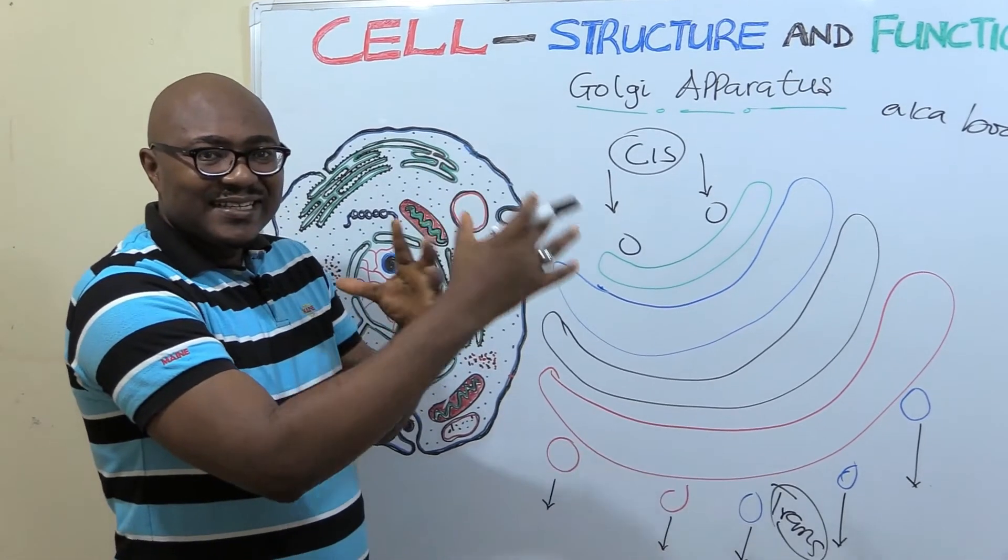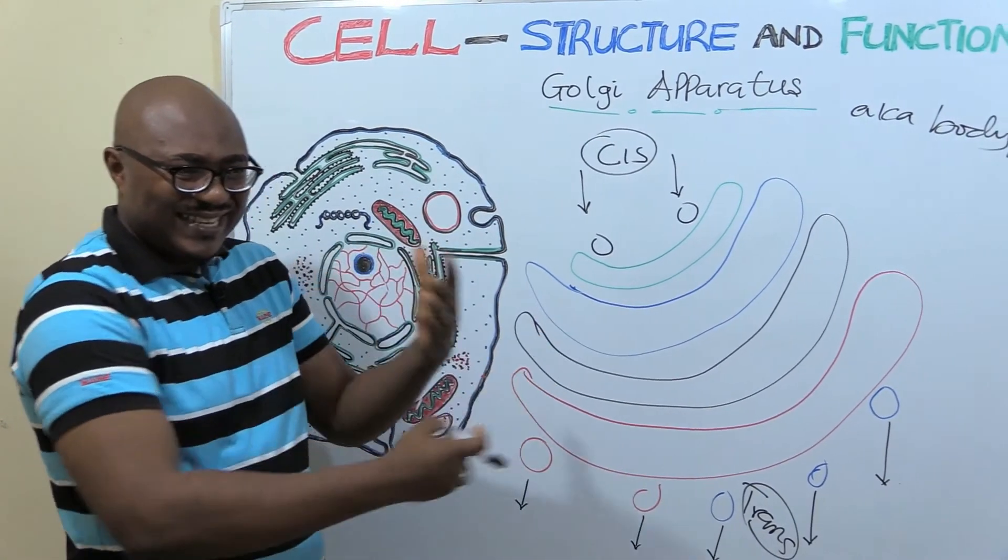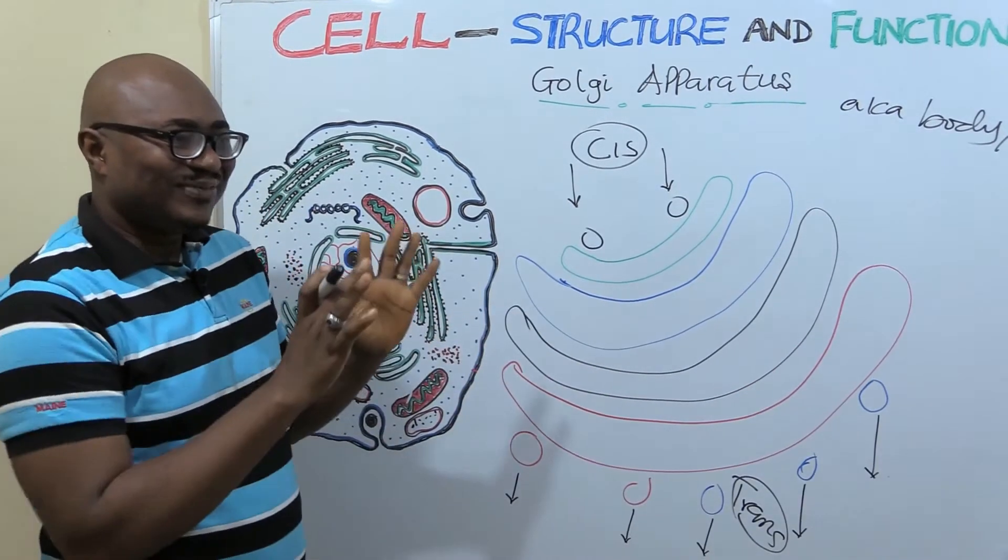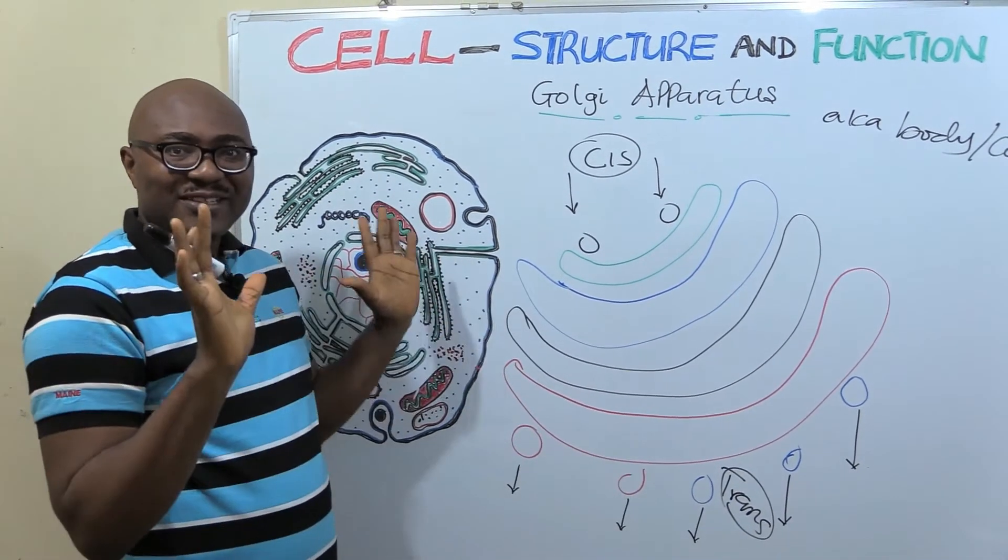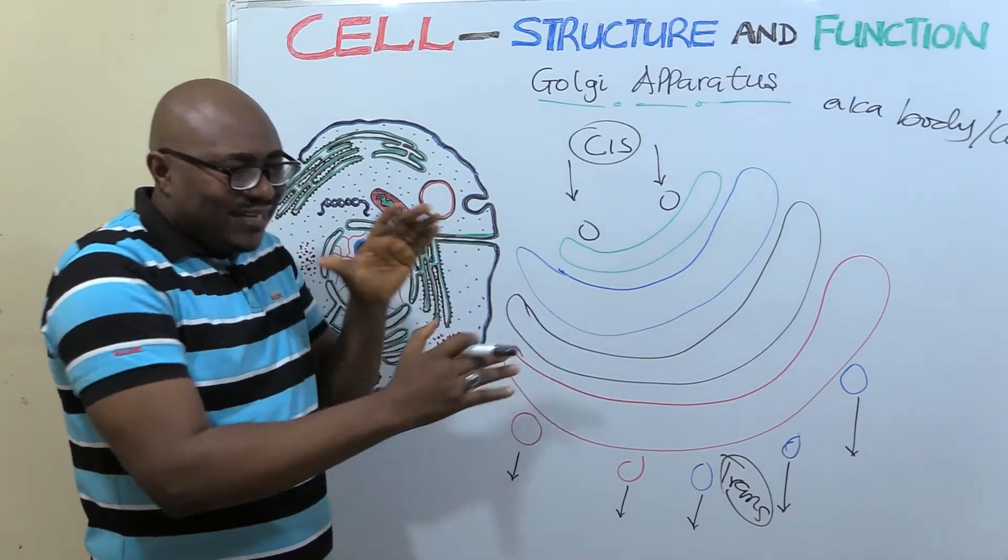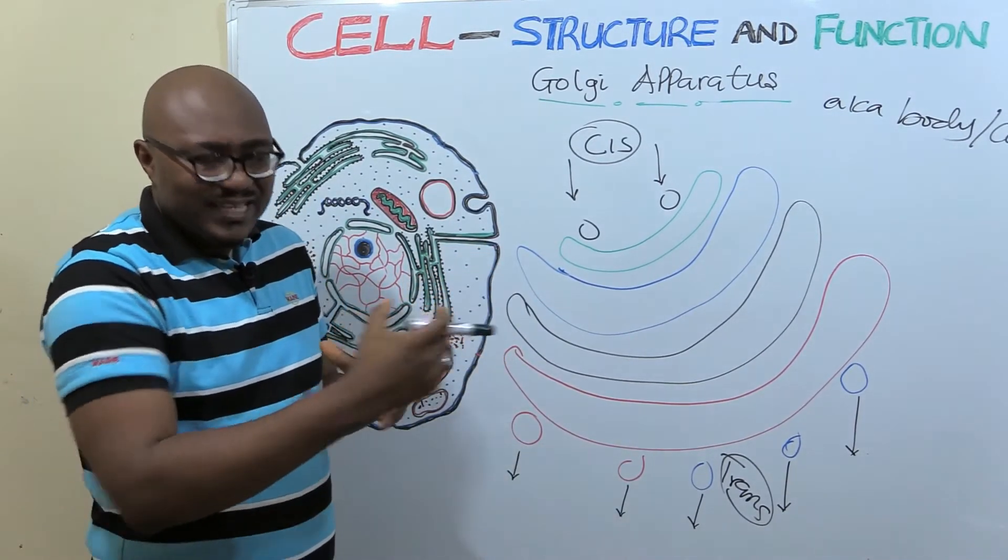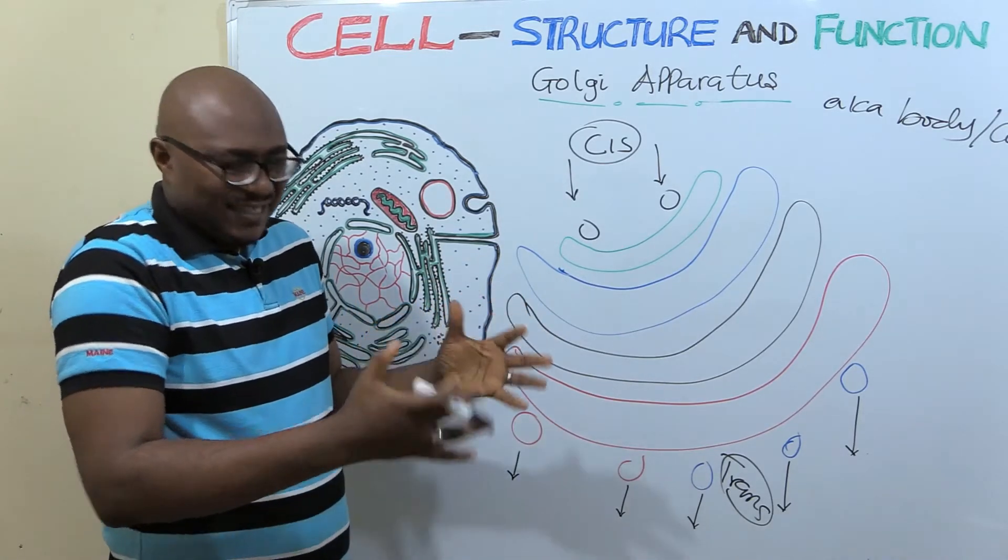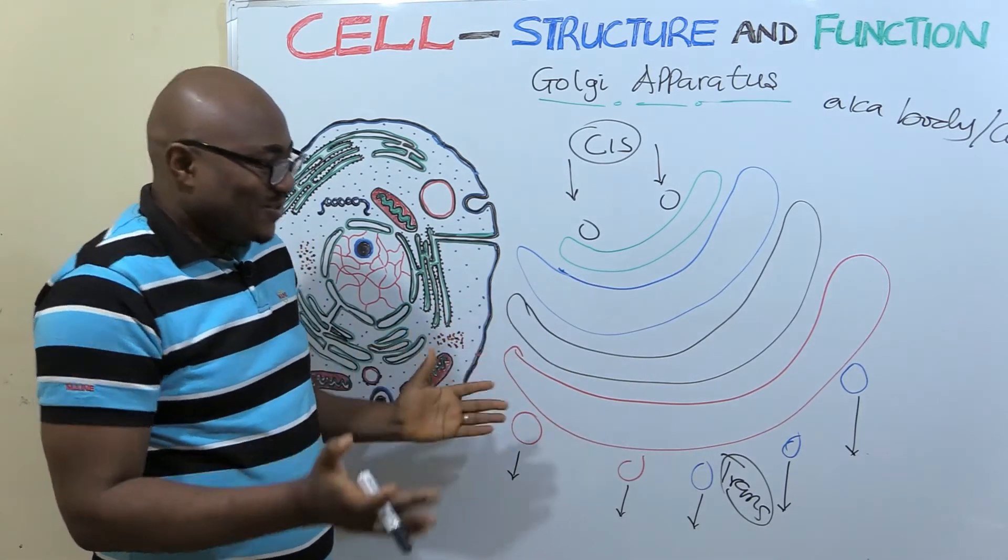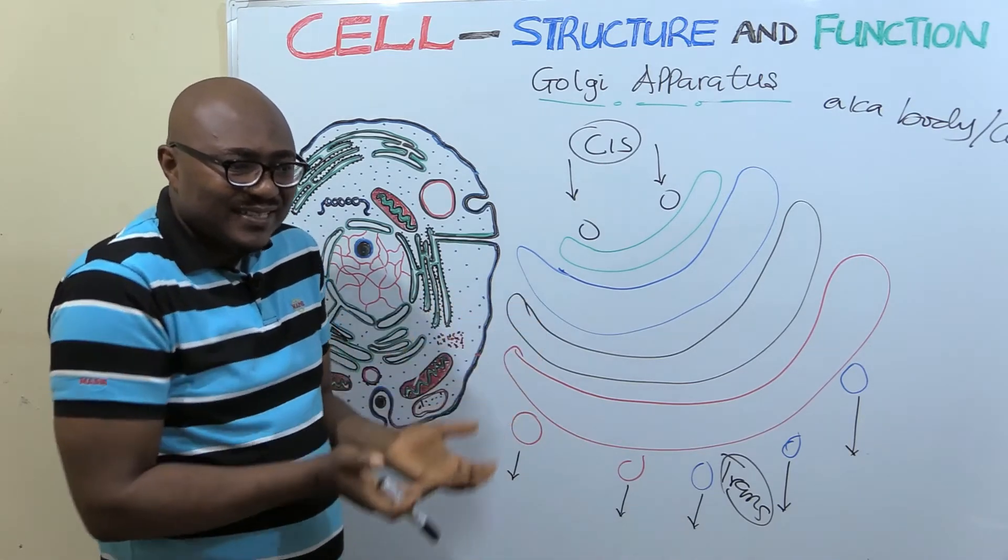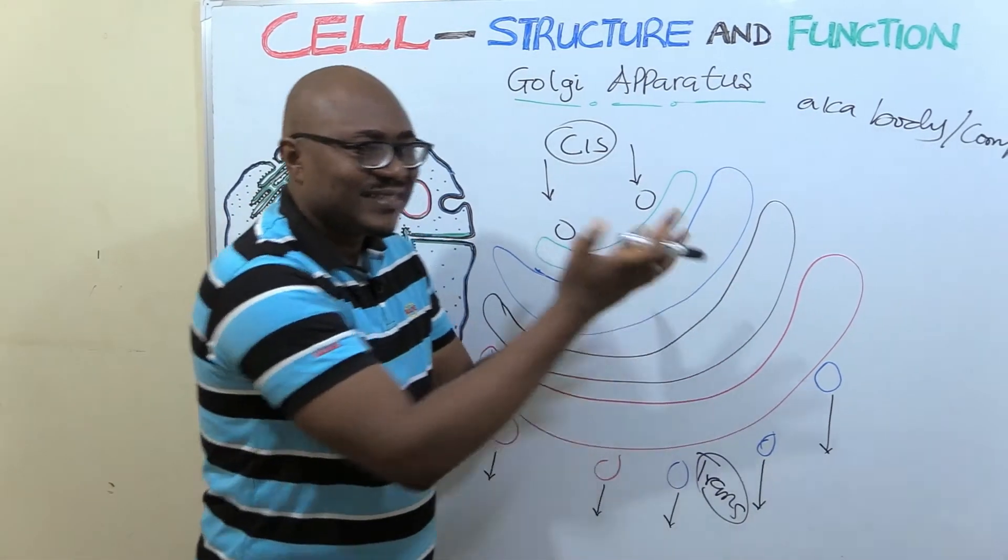So what does the Golgi apparatus do? It modifies. It processes. So you finish cooking the food. It's ready. You've manufactured it. But you add a lot of things. So it adds. It removes. It modifies. It packages it. You put it on the plate. Sometimes maybe you have to cover it. Package it. Then go and present it.